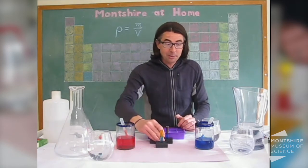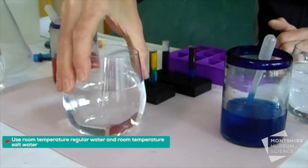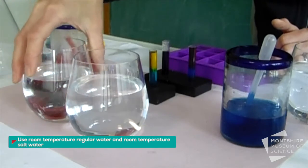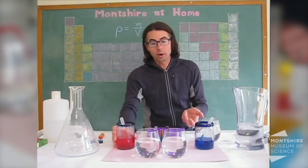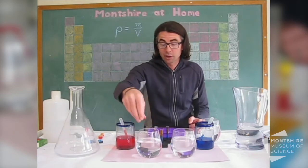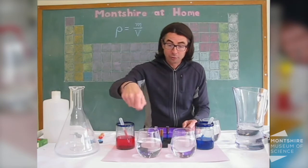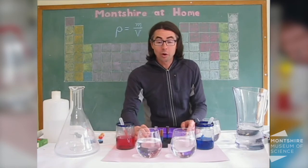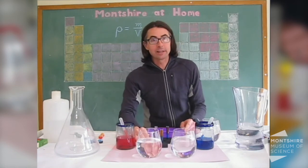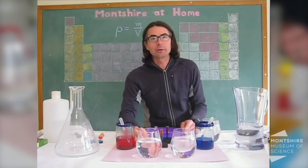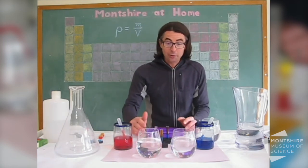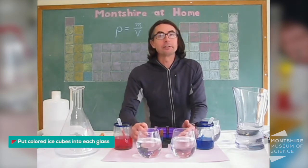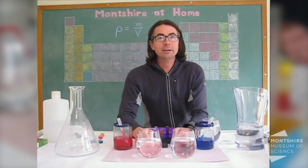For the experiment I want you to try today, you're going to take some regular room temperature fresh water and also a glass of room temperature salt water. To make the salt water, take a spoonful of salt and stir it in and let it dissolve. Get another spoonful and stir it in, and keep doing that until no more salt will dissolve into your water. At that point it's going to be saturated and you'll be ready to begin your experiment. Into each glass we're going to put an ice cube — but not just a regular ice cube. We're going to put in some colored ice cubes that'll help us see what's going on in there a little bit more easily.